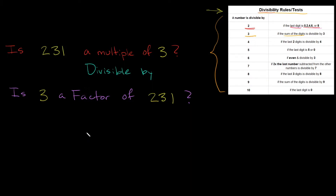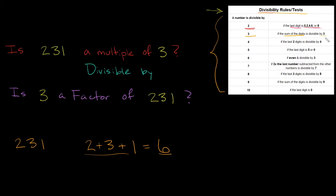What does 'sum of the digits' mean? We take 231 and add up each digit: 2 plus 3 plus 1. That equals 6 — 2 plus 3 is 5, and 5 plus 1 is 6. So 6 is the sum of the digits. Is 6 divisible by 3? Yes — 3 fits into 6 evenly, 2 times. So it passes our test. Is 231 a multiple of 3? Yes. Is 231 divisible by 3? Yes. That's how you check if a number is divisible by 3.